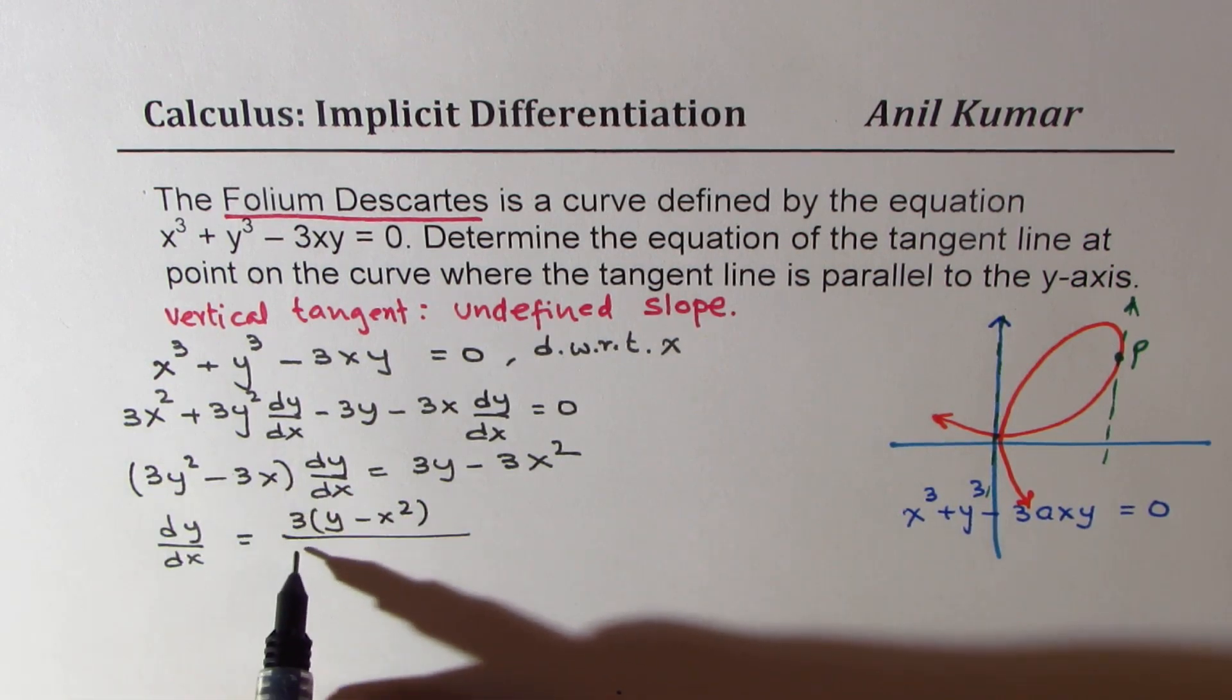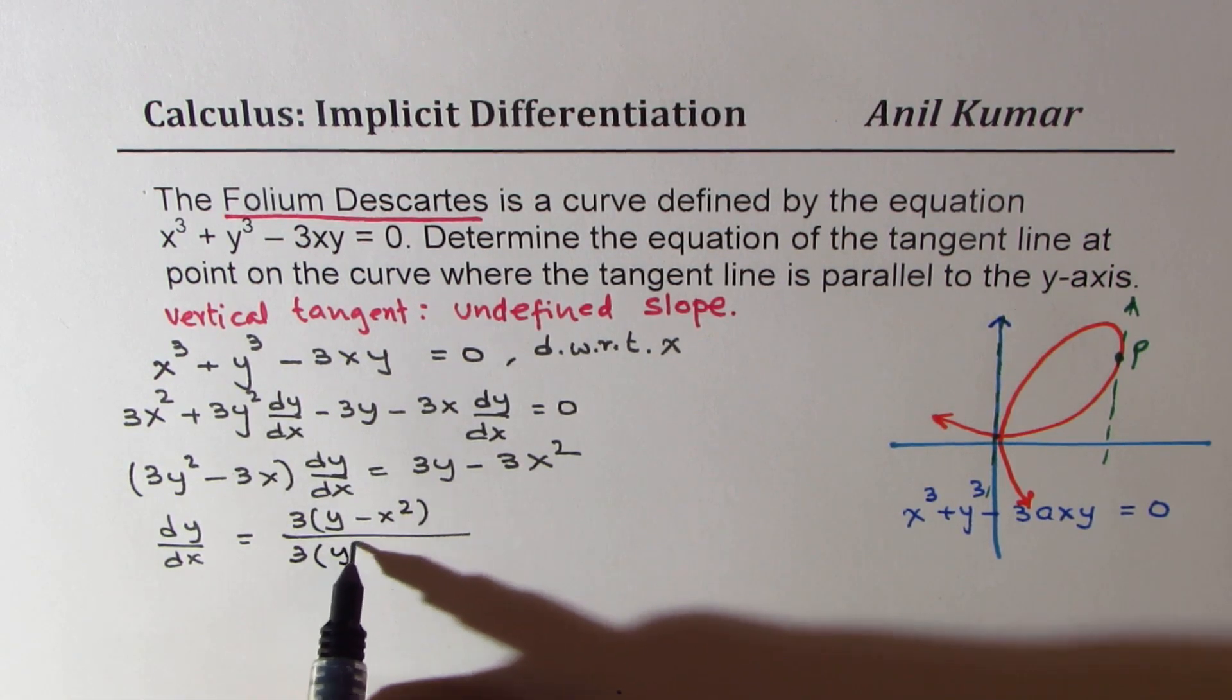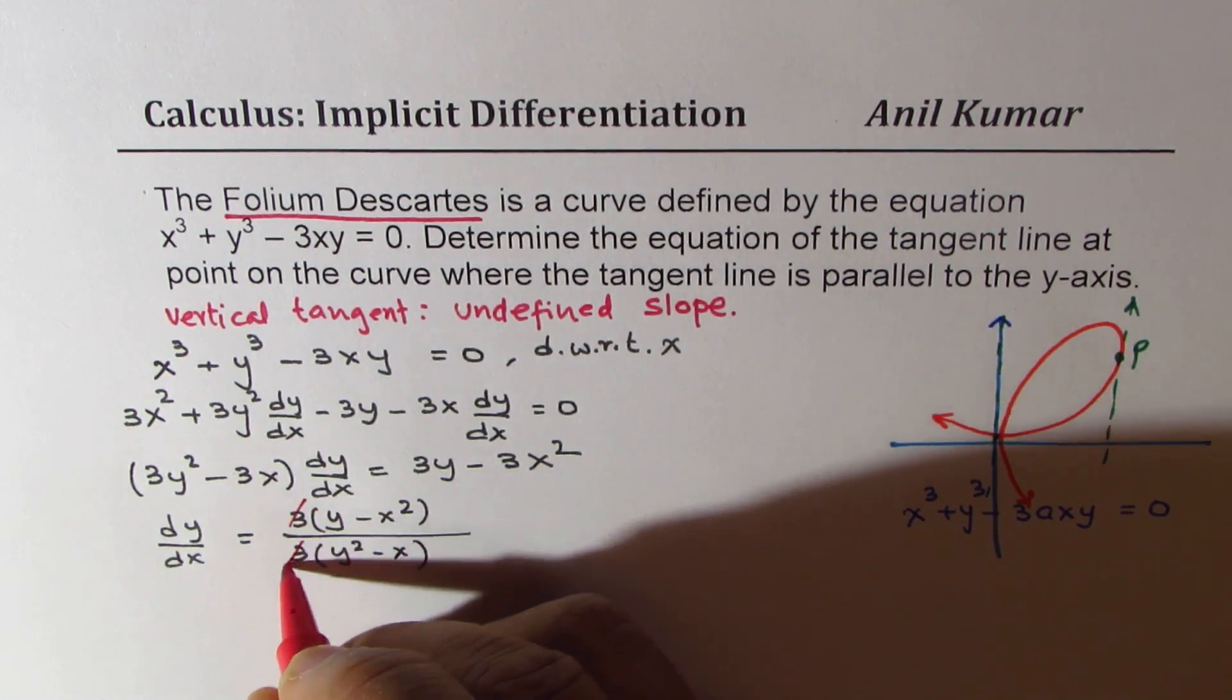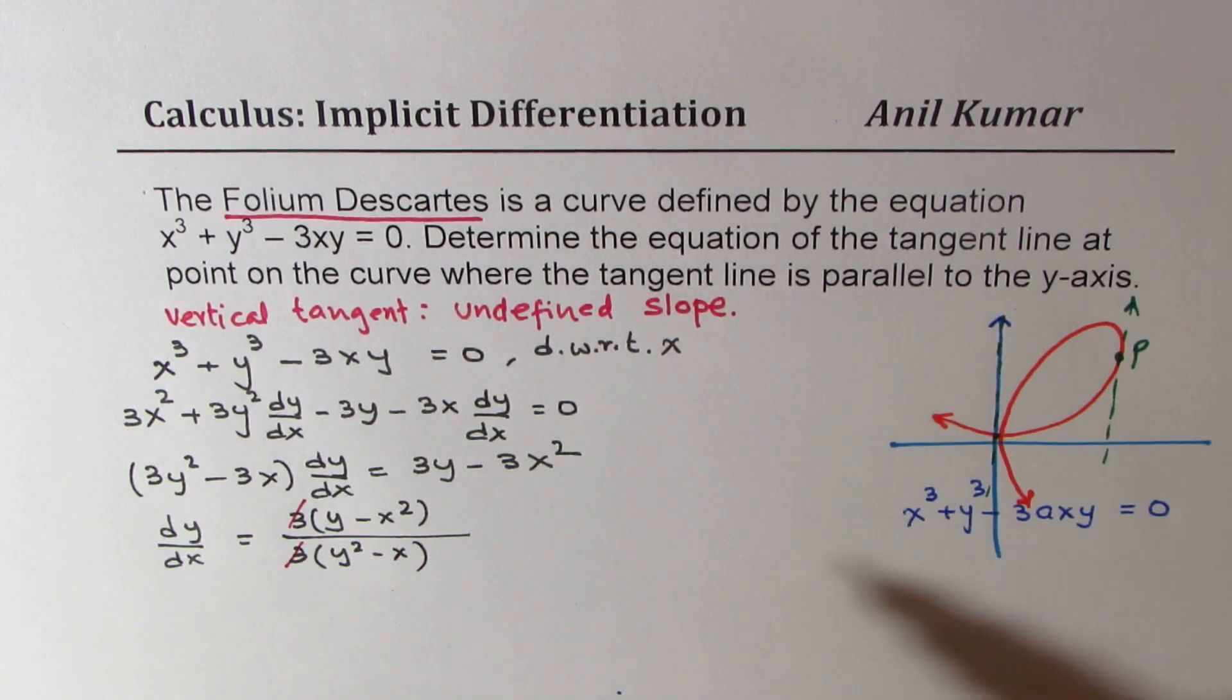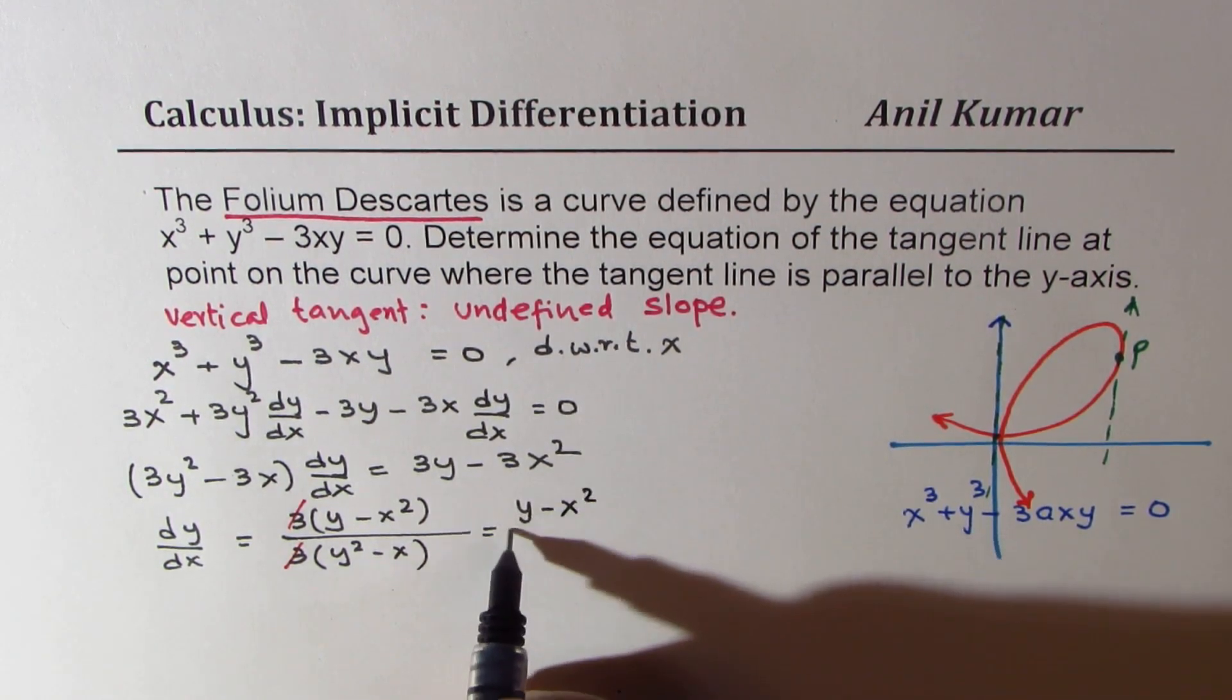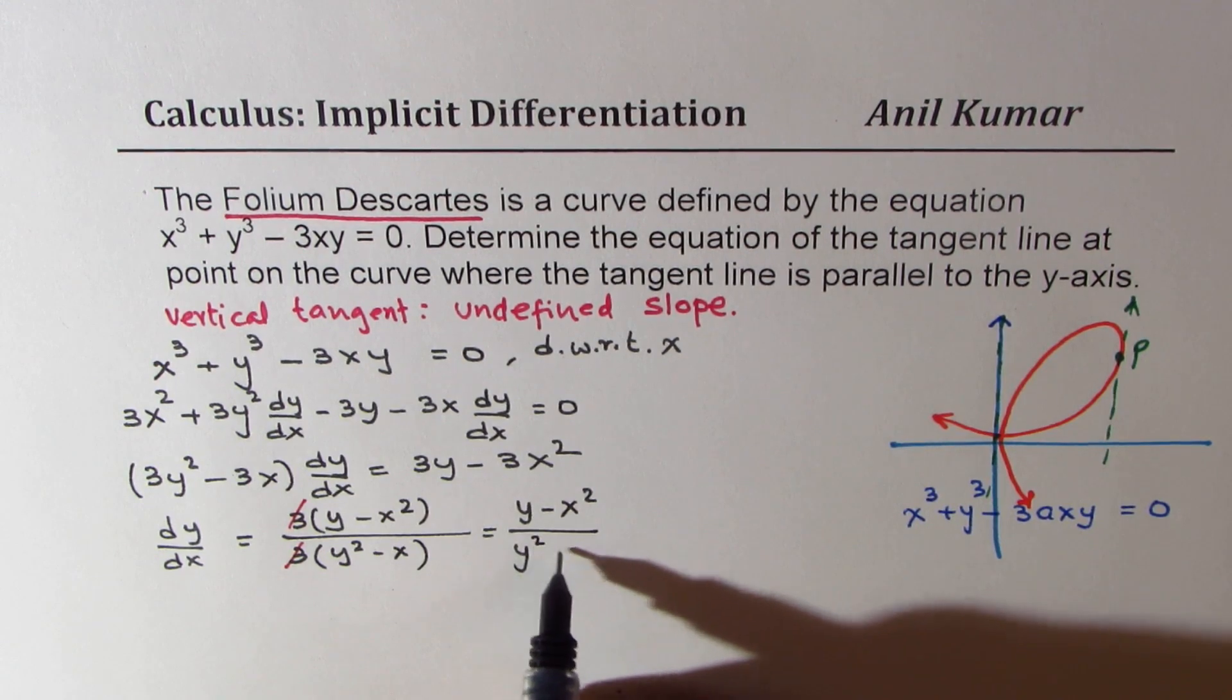So dy/dx is equal to 3 is common, y minus x squared divided by, again, 3 is common here also, y squared minus x. So 3 and 3 cancel out. So we get the derivative as equal to y minus x squared divided by y squared minus x.